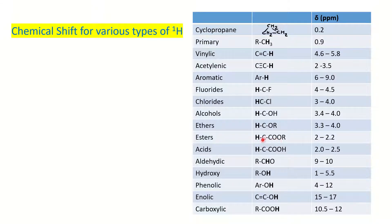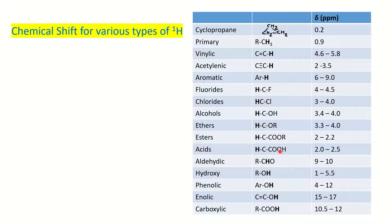As electronegativity increases, it increases the chemical shift value of the proton. For ethers, the value is almost the same as alcohols. For esters, the C-H proton nearest to the ester group has a value of 2 to 2.2. For carboxylic acids, the neighboring C-H has a value of 2 to 2.5 — deshielded compared to the primary value of 0.9, because of the presence of the COOH group.